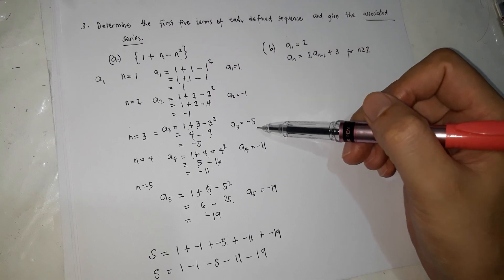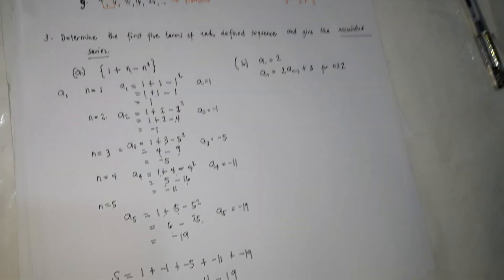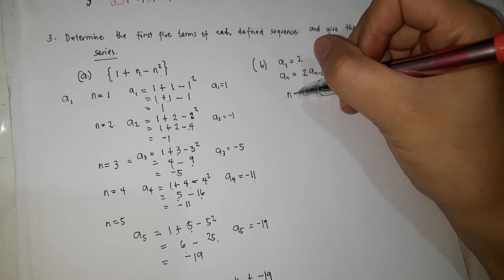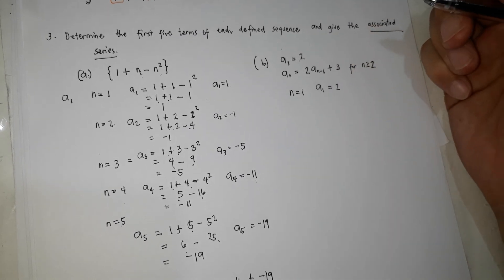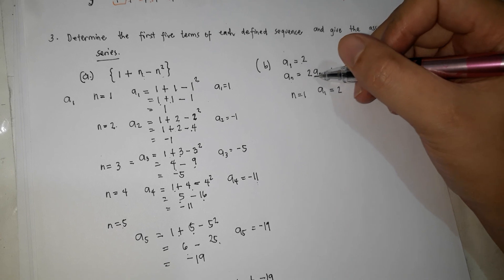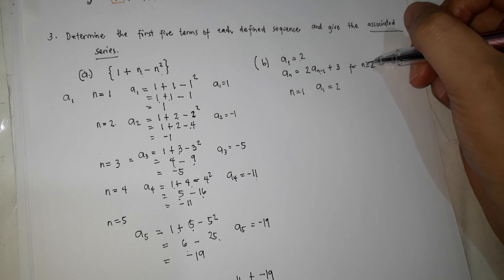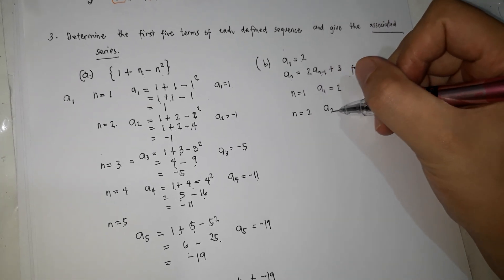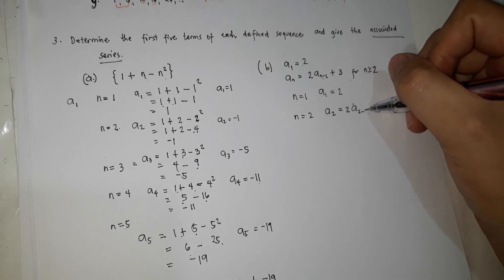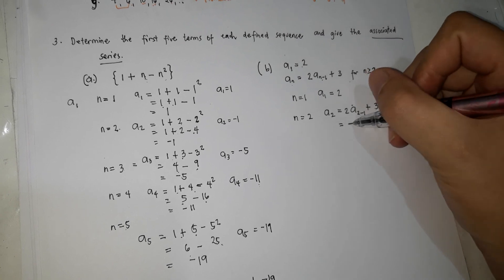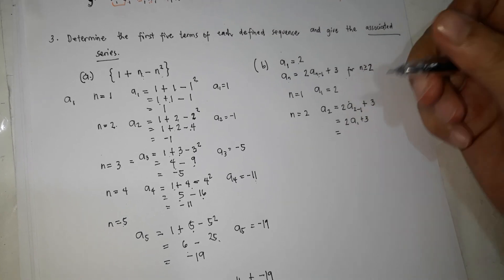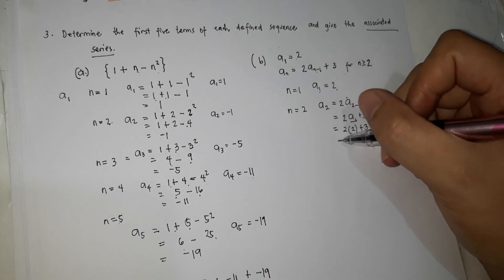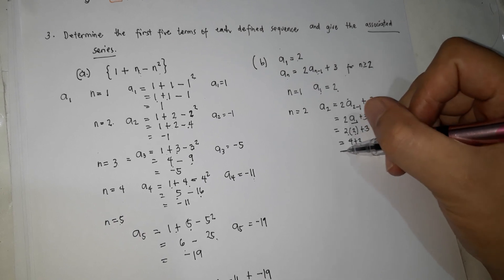Now the second sequence. It is given that a1 = 2. So when n=1, a1 is always equal to 2 — no solving needed. But for n ≥ 2, the formula is an = 2·a(n−1) + 3. For a2: 2·a1 + 3 = 2 times 2 plus 3 = 4 plus 3 = 7. So a2 is 7.